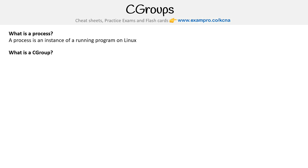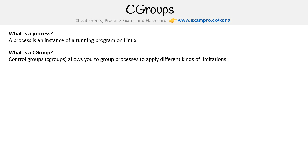So then what is a cgroup? Well, cgroup stands for control groups, and allows you to group processes to apply different kinds of limitations.